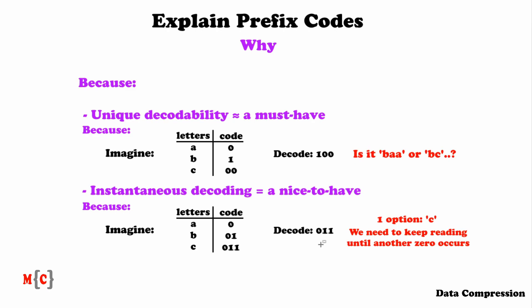Therefore, instantaneous decoding is not a must-have, but a nice-to-have — it still results in one option, but it makes the decoding process a lot easier. The beautiful thing about prefix codes is that they guarantee both unique decodability and instantaneous decoding, and these are some really useful guarantees. This answers the question: why are prefix codes so important?